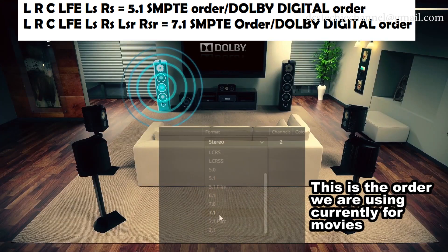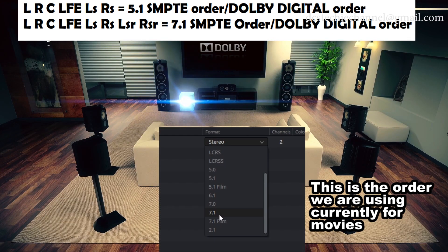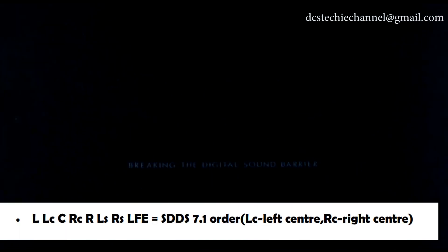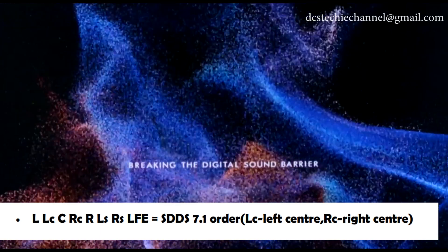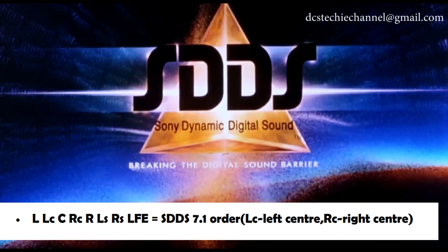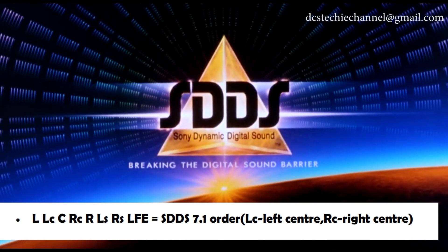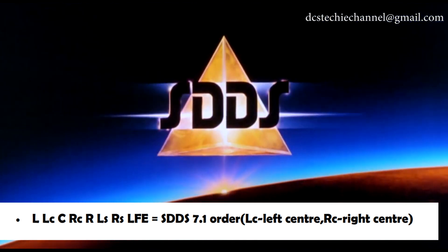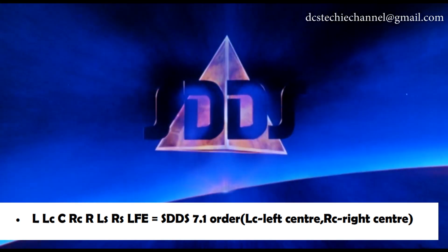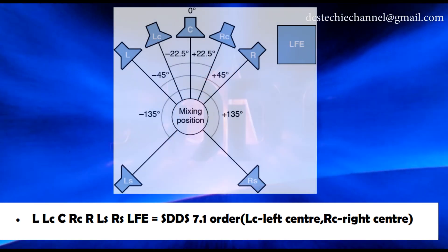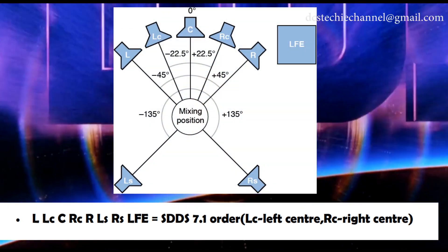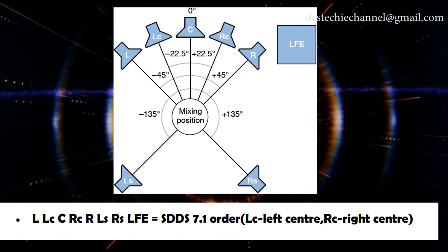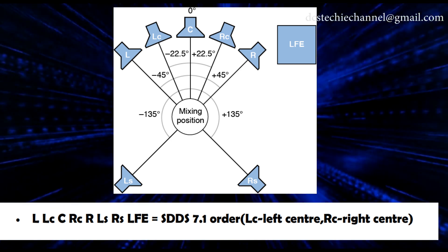Dolby and SMPTE adapted the order L R C LFE Ls Rs for 5.1, and L R C LFE Ls Rs Lsr Rsr for 7.1. There is another sound format called SDDS which is totally different from general 7.1, using the order: L, LC, C, RC, R, Ls, Rs, LFE — where LC is left center and RC is right center.